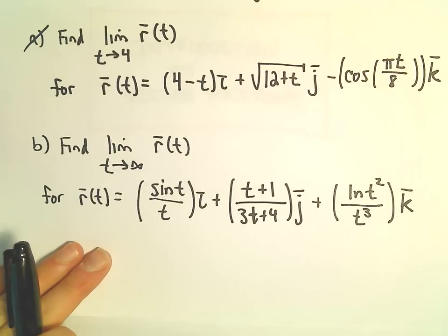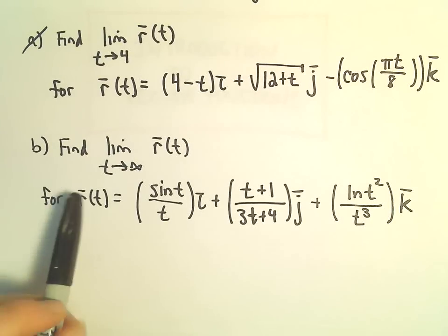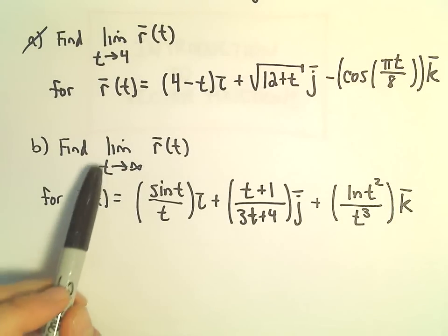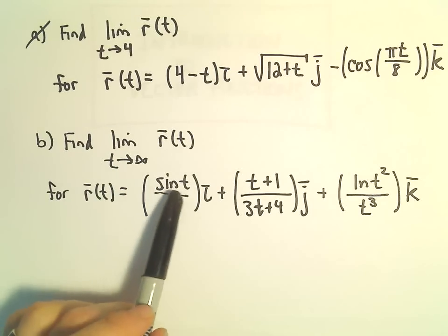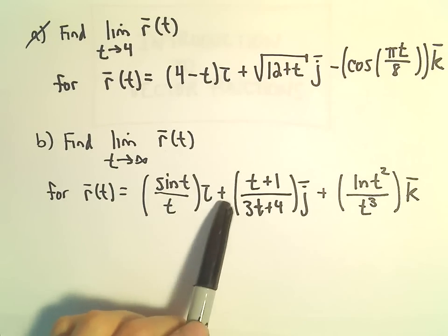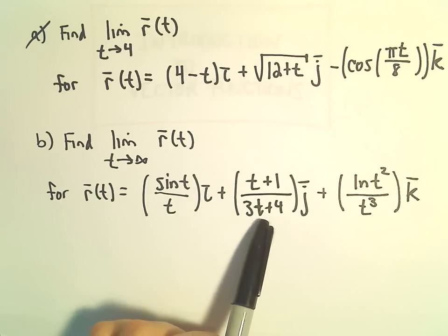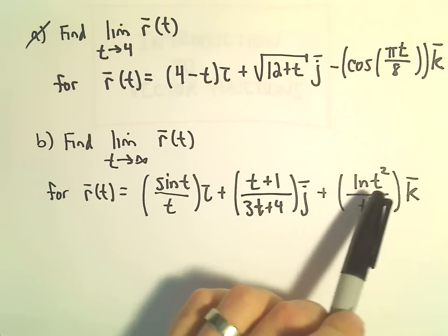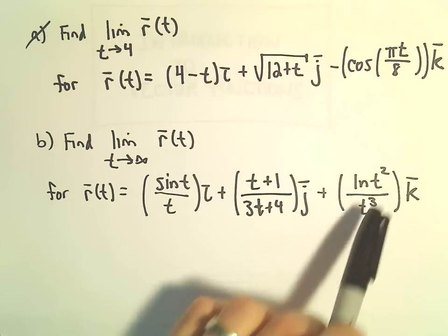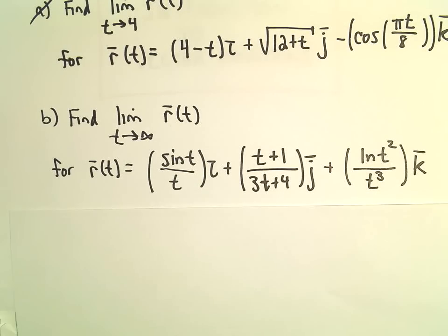Another example here of finding a limit involving a vector-valued function. We're going to find the limit as t goes to infinity of sine of t over t times i, plus t plus 1 over 3t plus 4 times j, plus the natural logarithm of t squared over t cubed times k.